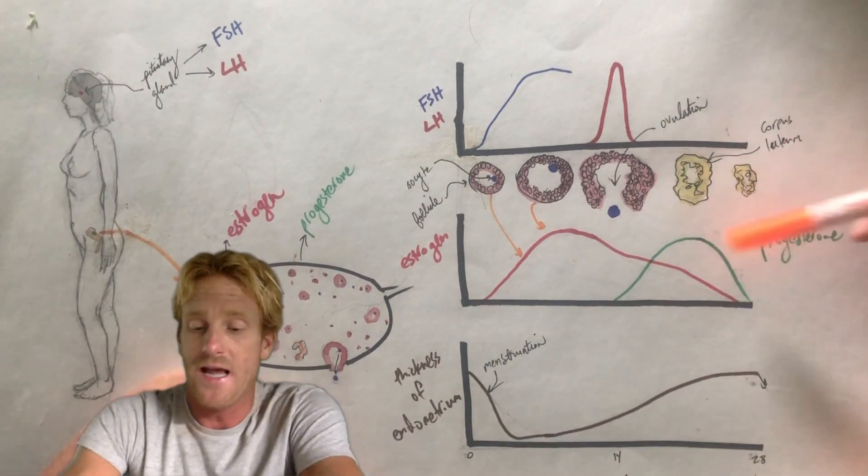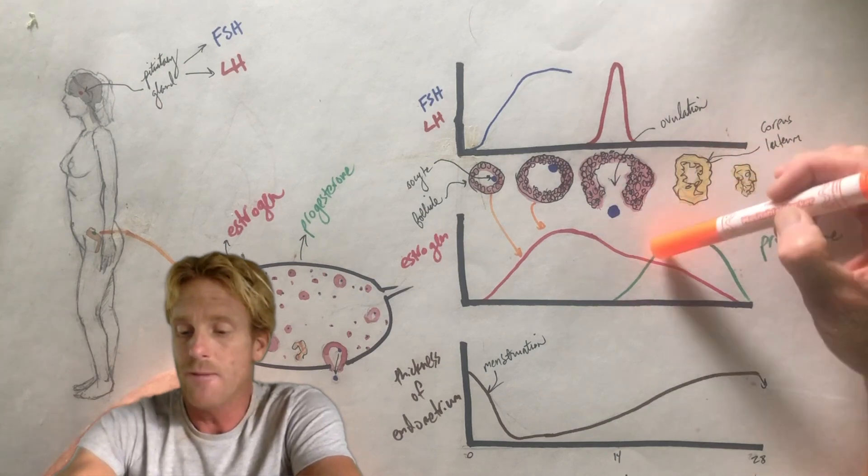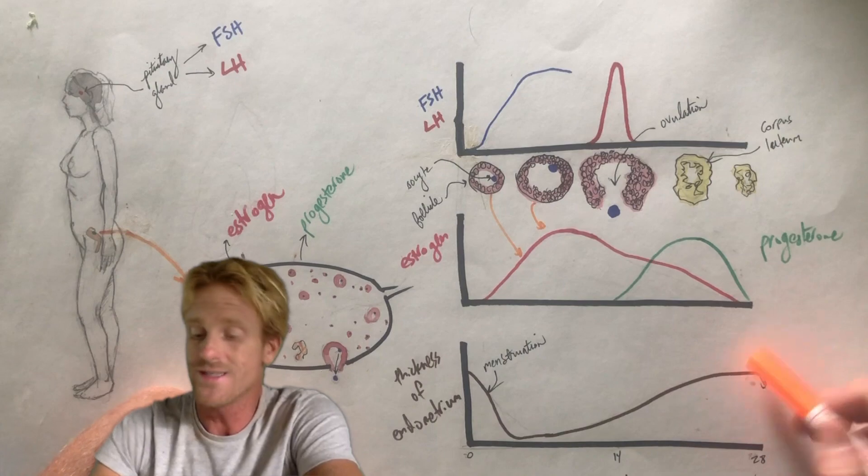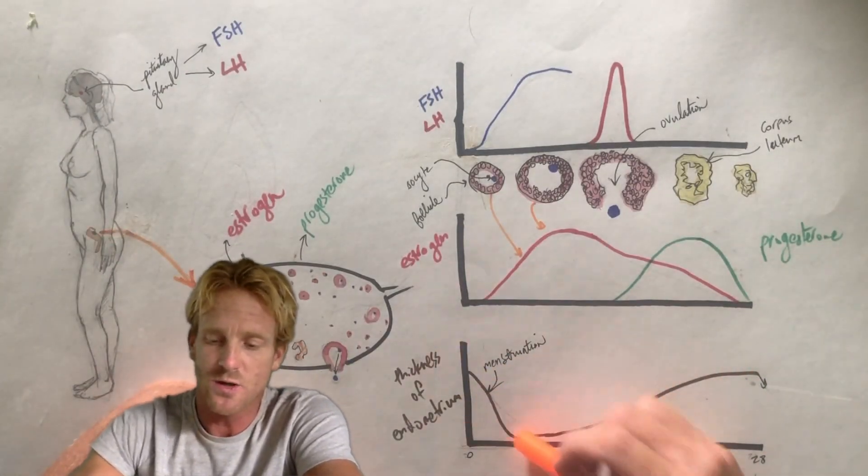Now, if this egg is not fertilized, then the yellow body is going to degrade. Progesterone goes down. When progesterone reaches low levels, it's going to tell the uterus that the baby is not there, and the uterine lining is going to shed. That's menstruation.